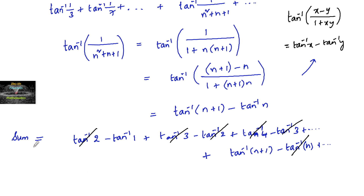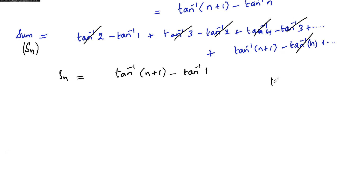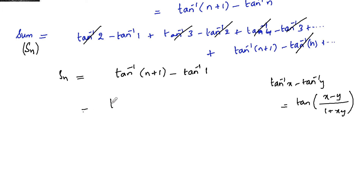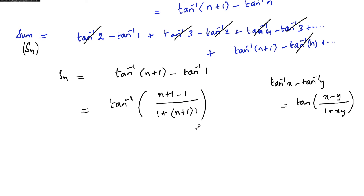Let's consider the sum to n terms. We get tan inverse(n+1) minus tan inverse(1). Applying the formula tan inverse x minus tan inverse y = tan inverse of (x−y)/(1+xy), we can write this as tan inverse of (n+1−1)/(1+(n+1)·1), which equals tan inverse of n/(n+2). This is the sum to n terms.